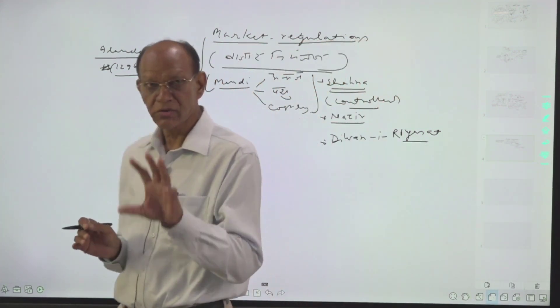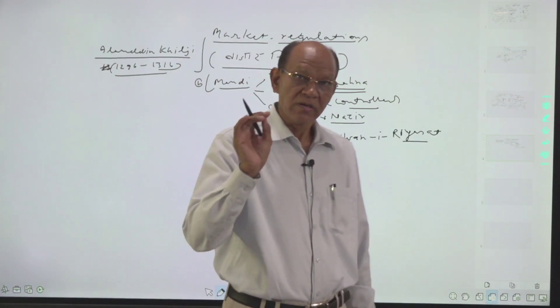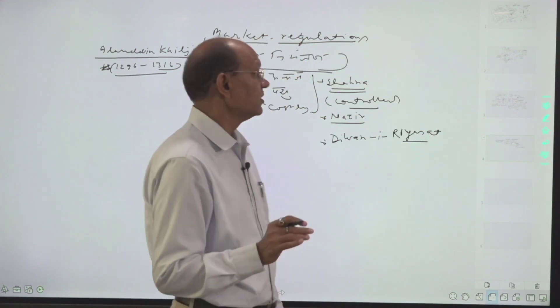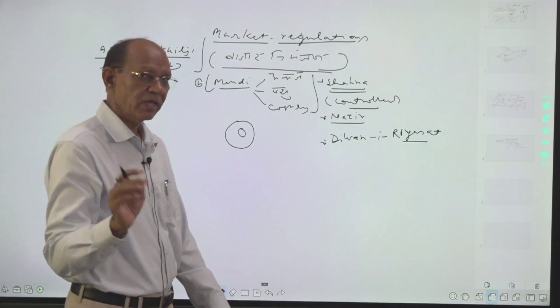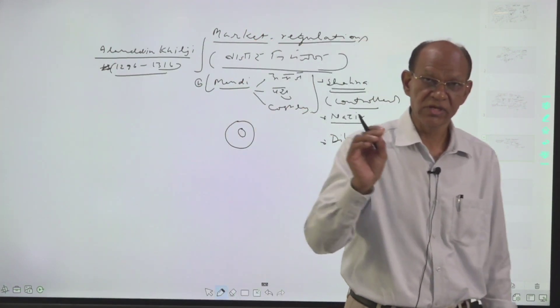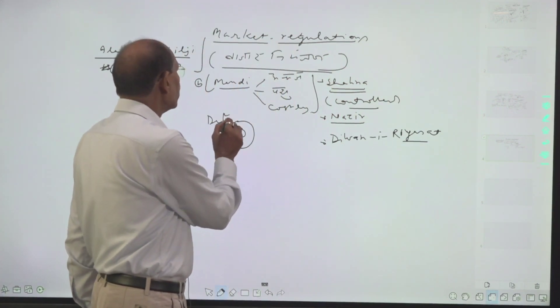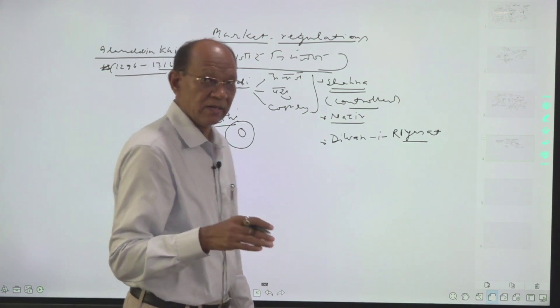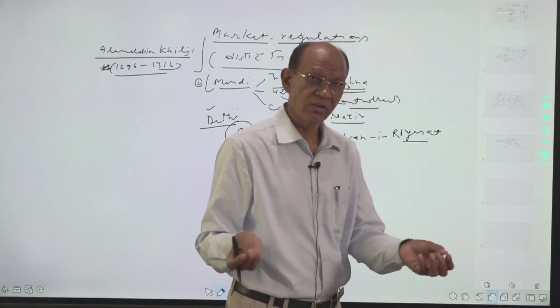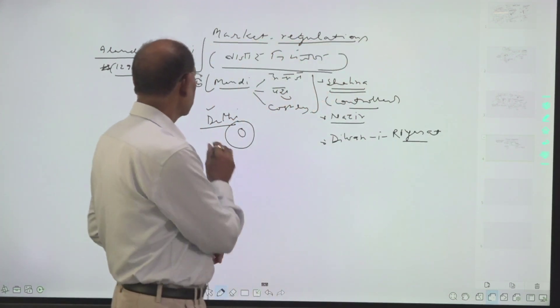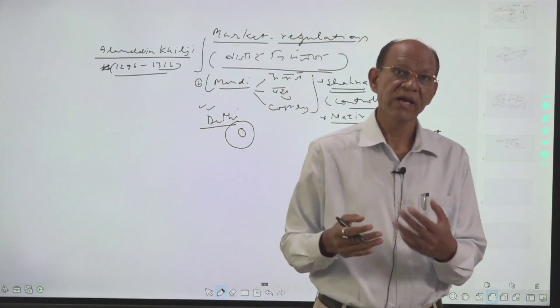Other measures were also taken to control the prices, specifically in the environs of Delhi. The market regulation measures of Alauddin Khilji were confined to Delhi. In Delhi there was inflation because currency was in more circulation, and it made living costly.